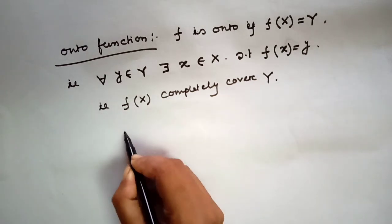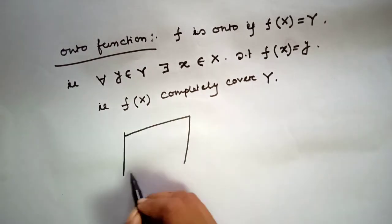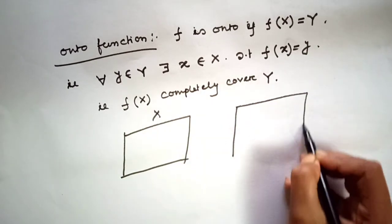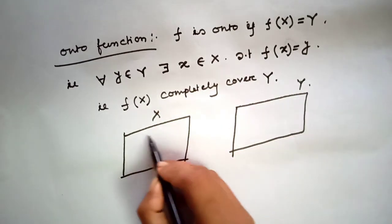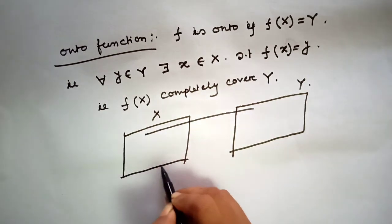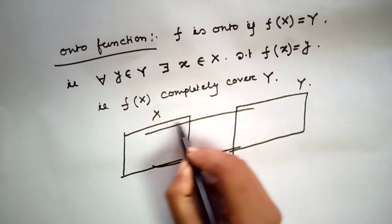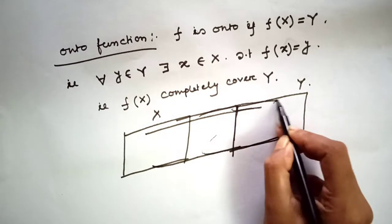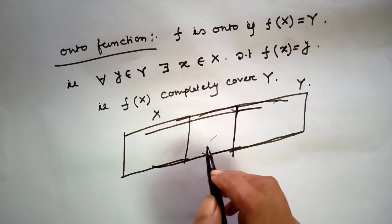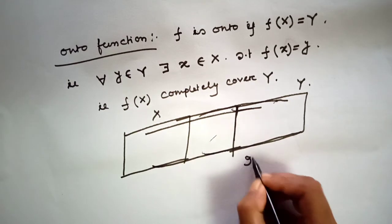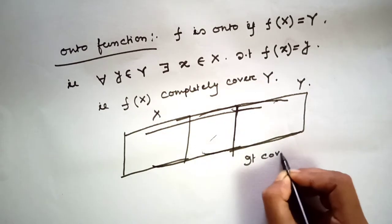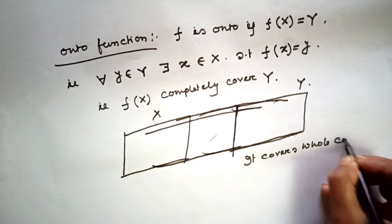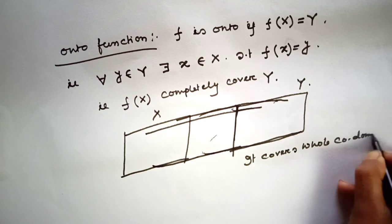Let's see the picture. This is the domain and this is the codomain Y. In an onto function, the mapping covers the whole codomain set Y.